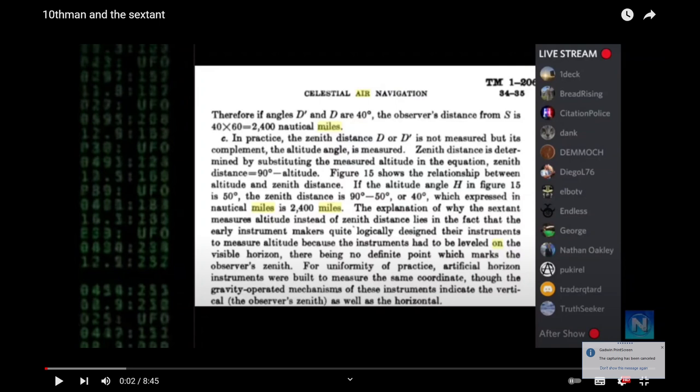Basically, it says that if you measure the zenith angle to be 40 degrees, the distance from the observer to the GP equals 40 times 60 nautical miles, that is 2400 nautical miles. So 10th man's claim is that you can use the 60 nautical miles per degree as a valid formula for calculating your distance to the GP of a star when navigating with a sextant on a flat earth.